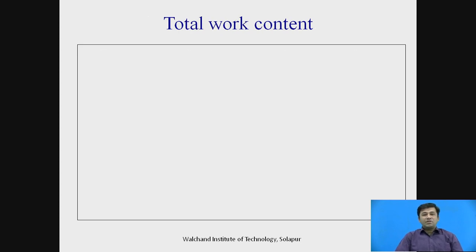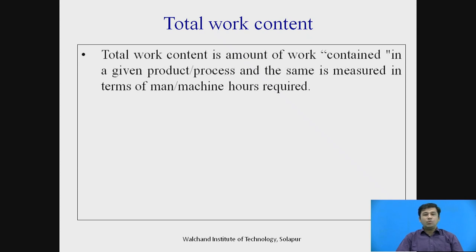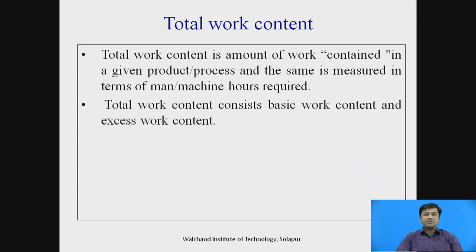For further studying industrial engineering, there are some basic terms we need to know. The first is total work content. Total work content is the amount of work contained in a given product or process, measured in terms of man or machine hours required. Total work content consists of basic work content plus excess work content.